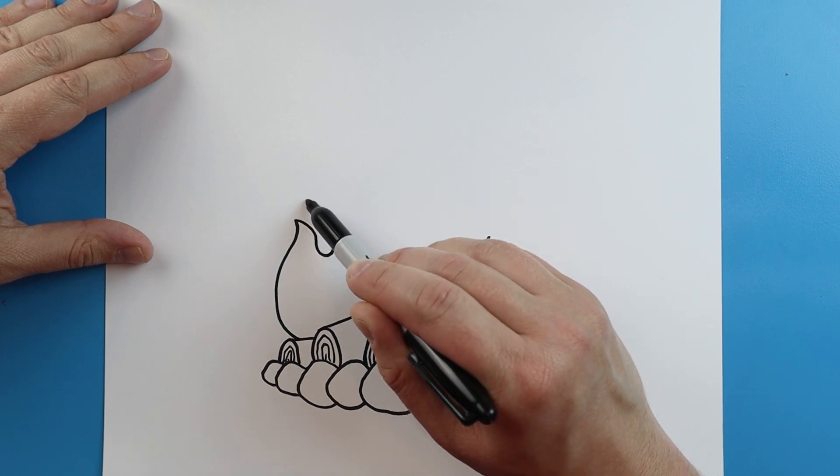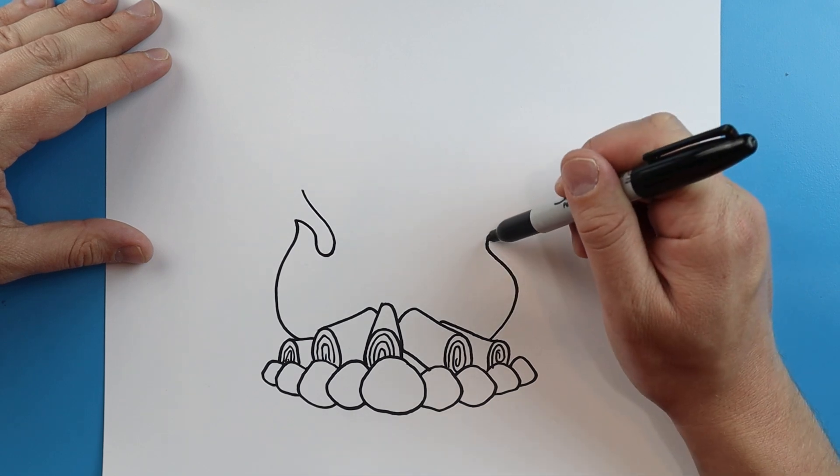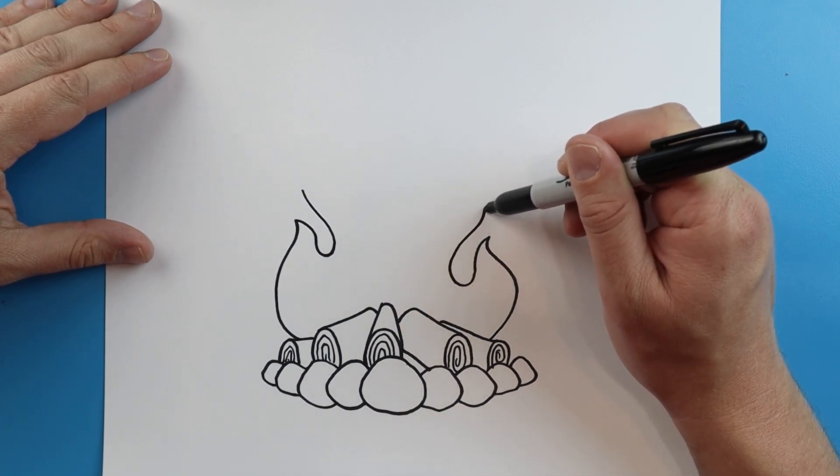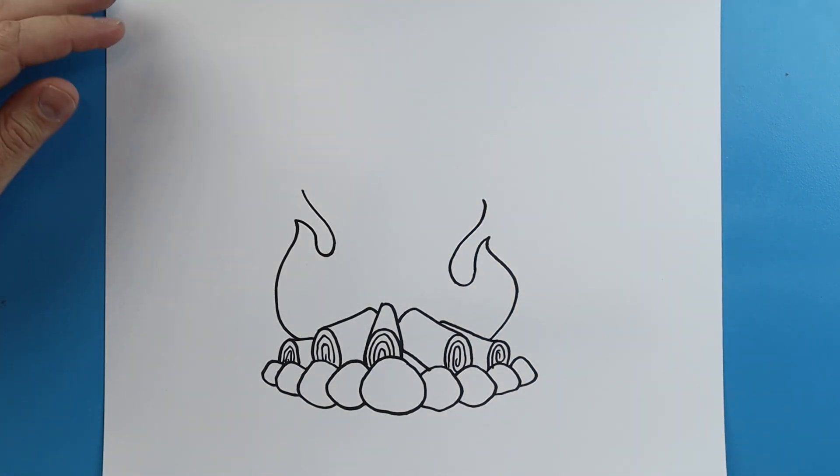And then I'm going to bring it back up. Same thing here, up to a point and down. And I'm going to make these kind of different sizes on each side just to give it a little bit more of a realistic look.